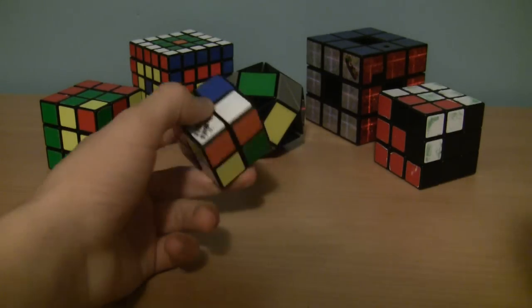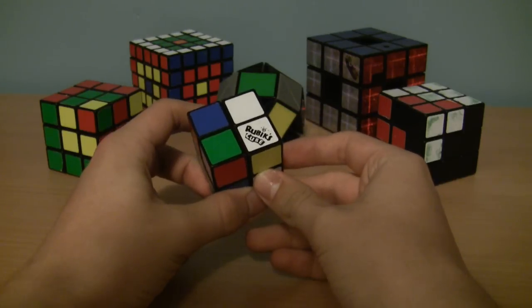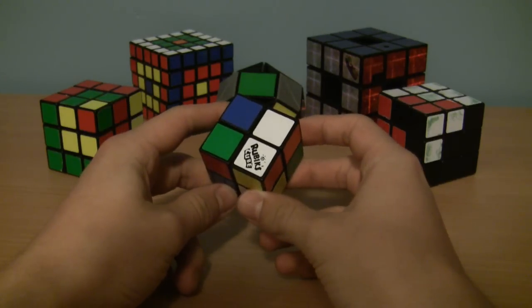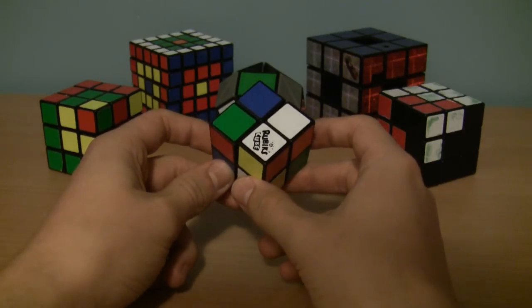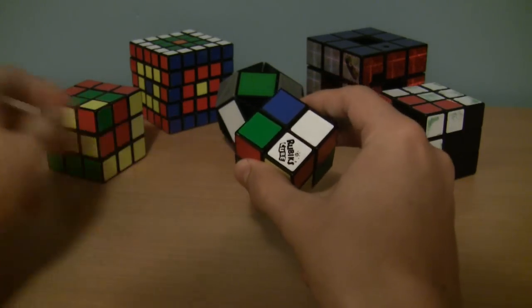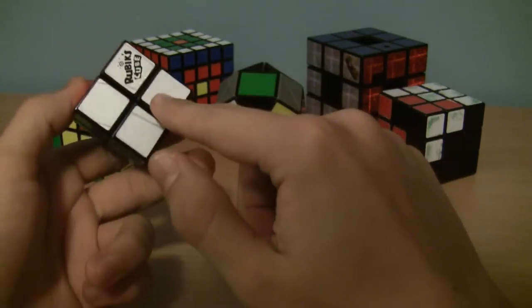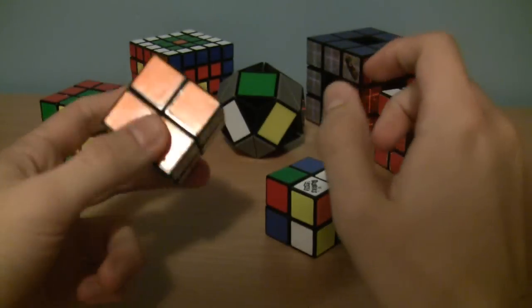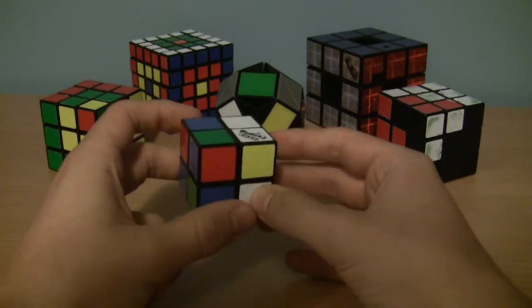The first step in solving a 2x2 is to get one layer done. By convention, I start with the white side. Now, I should note that on a 2x2 Rubik's Cube, it often uses the Japanese color scheme. This means that white is actually opposite to blue. On a 3x3, usually white is opposite to yellow. So just keep that in mind if you choose to solve white first.